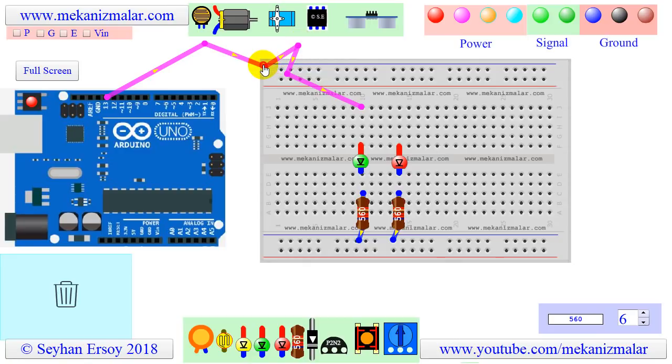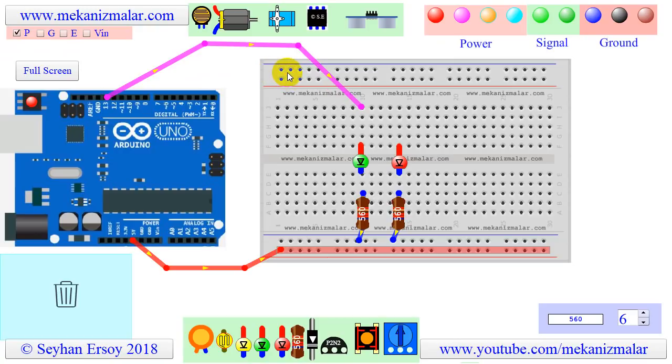The power checkbox indicated by P shows a power line connection between the Arduino and the breadboard. Note that the arrows on the power wire show the direction of the current, from the Arduino to the breadboard.